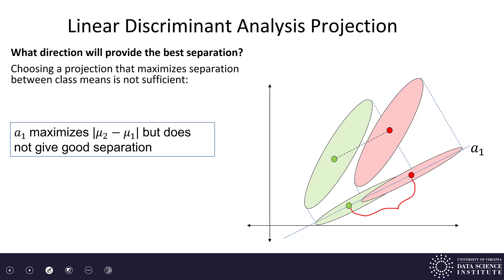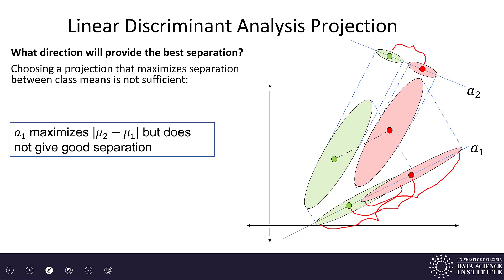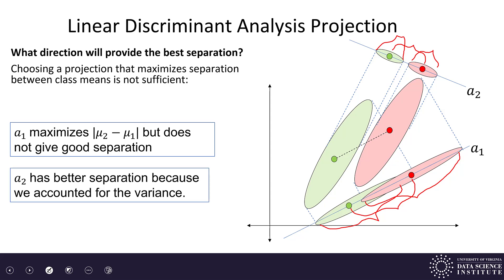What I really want in linear discriminant analysis projection is to project in a direction that maximizes separation between means but also minimizes the spread of the classes. The way I projected those classes, they have a lot of spread or variance after projection. This new projection a2 still keeps pretty good separation between the means, but the variance or spread of my classes is minimized — that's the trade-off we're looking for.